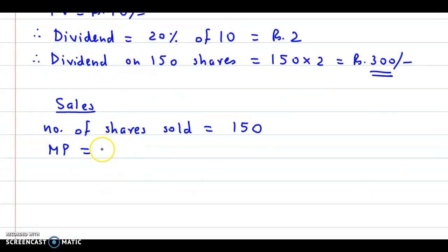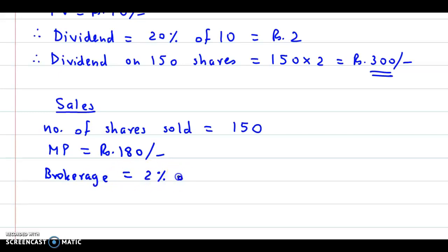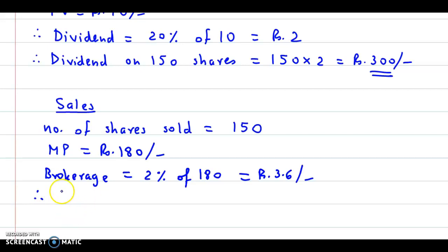So brokerage is 2% of 180. Let us calculate: 2% of 180 is rupees 3.6. Now, the selling price per share will be market price minus brokerage, that is 180 minus 3.6, which gives us rupees 176.4. Therefore, the total selling price for 150 shares is 150 into 176.4, which gives us rupees 26,460.